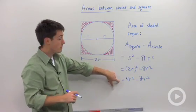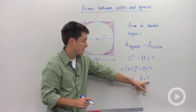So the area of the shaded region is going to be 4 times your radius squared minus pi times your radius squared.